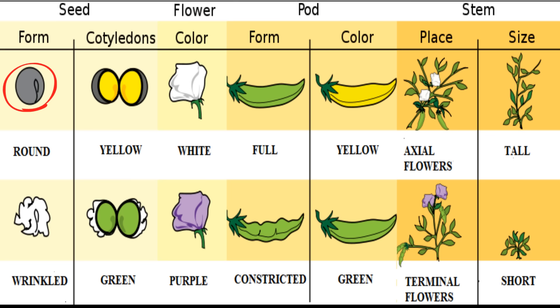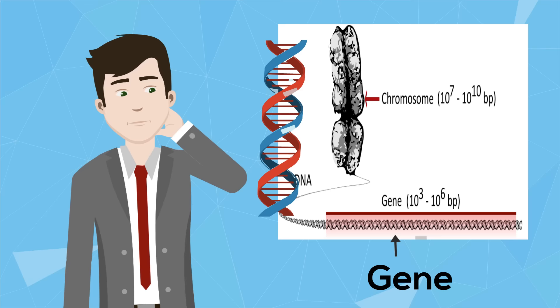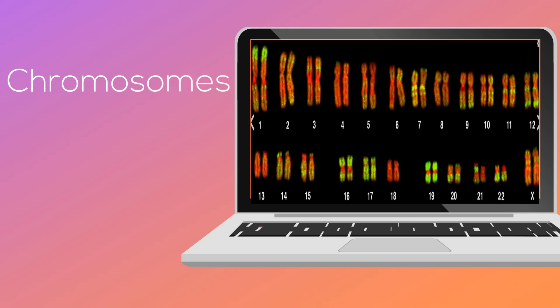Traits are characteristics that can be passed from one generation to another. A gene is a portion of DNA that contains the genetic code for the trait. Genes are located on chromosomes. Humans have 23 pairs of chromosomes for a total of 46.